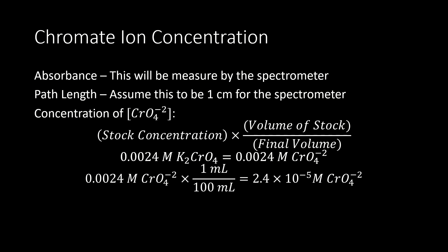It's easy to calculate the concentrations — simply take the concentration on your stock bottle, multiply by the volume you take from that stock bottle, divided by the final volume you bring your solution to. In our stock bottle, it's going to be 0.0024 molar potassium chromate, which in a one-to-one ratio becomes 0.0024 molar chromate. For example, for the first solution, you take one milliliter of that chromate ion and dilute to 100 milliliters by adding 99 milliliters of water. This gives a concentration of 2.4 × 10⁻⁵ molar chromate.